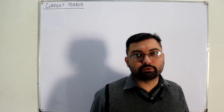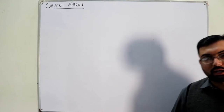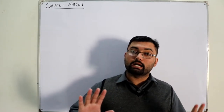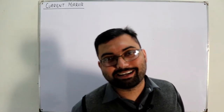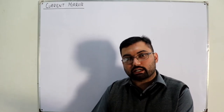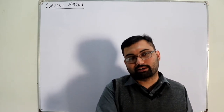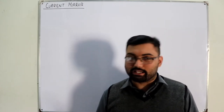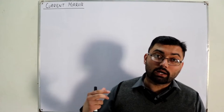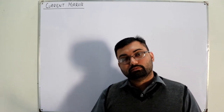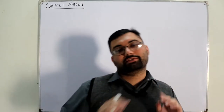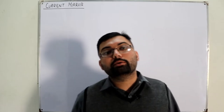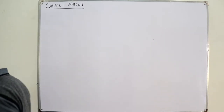As-salamu alaykum. Welcome back to Saleh Khan's YouTube channel where today we start the new topic of current mirror circuits — another application of the BJT. Current mirror, as the name suggests, means a current at one part of the circuit is the mirror image of a current in another part of the circuit. The book defines it as a DC network in which the current in one part of the circuit is controlled by a current in another part — so the output current equals the input current.